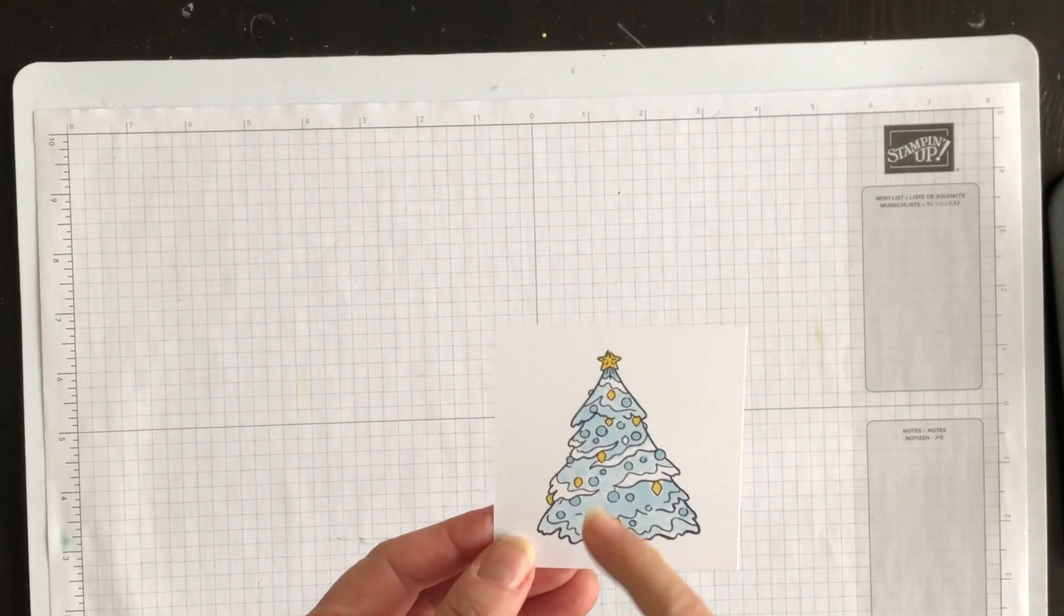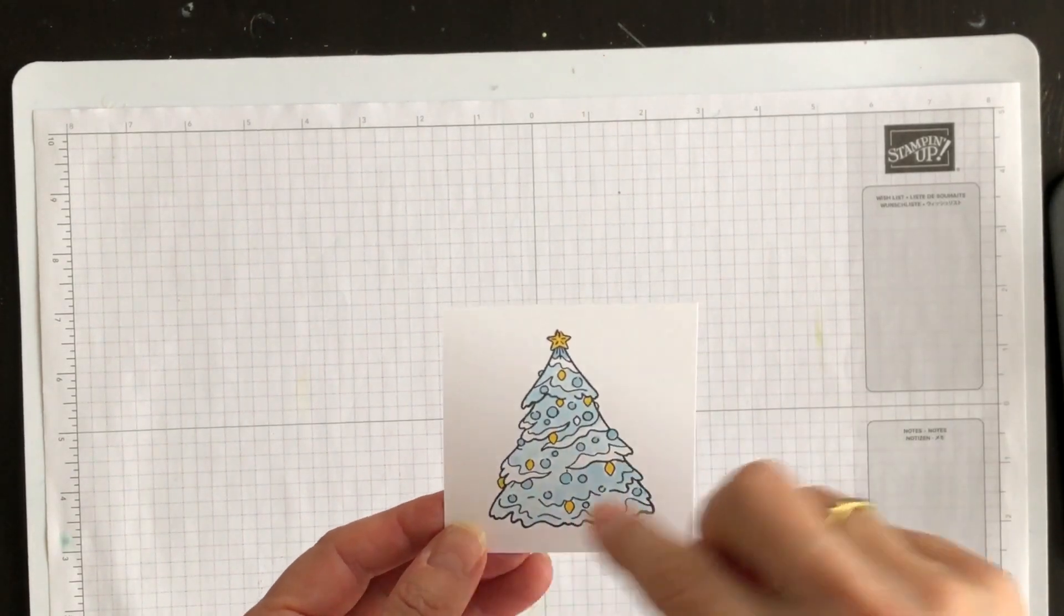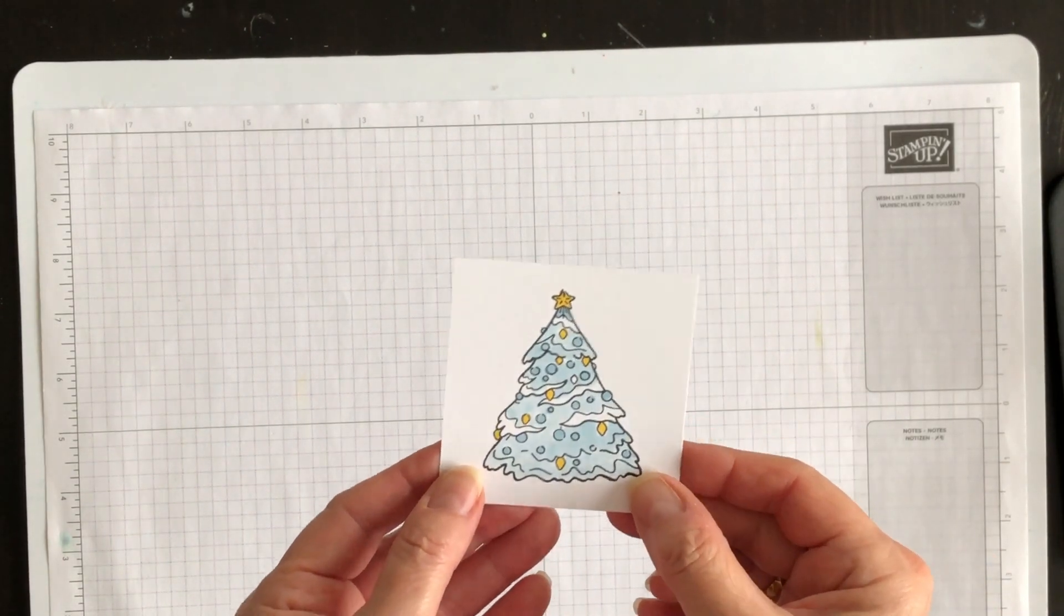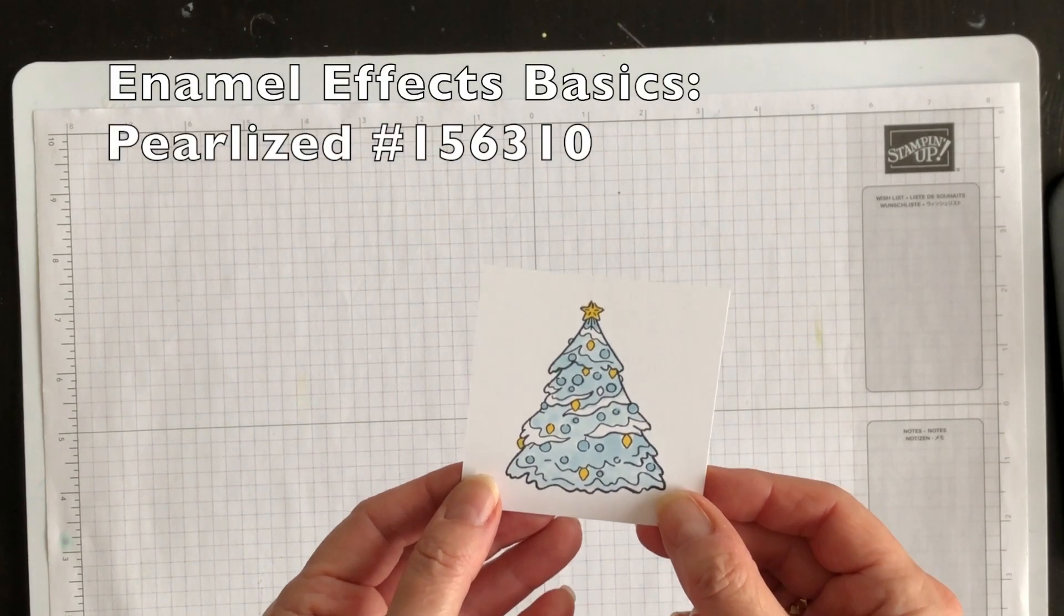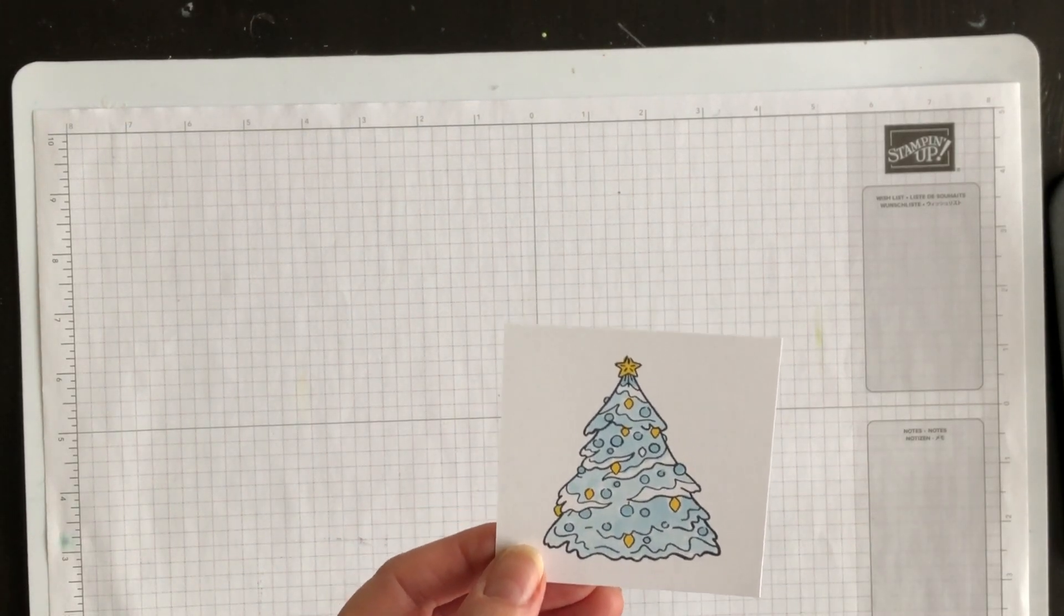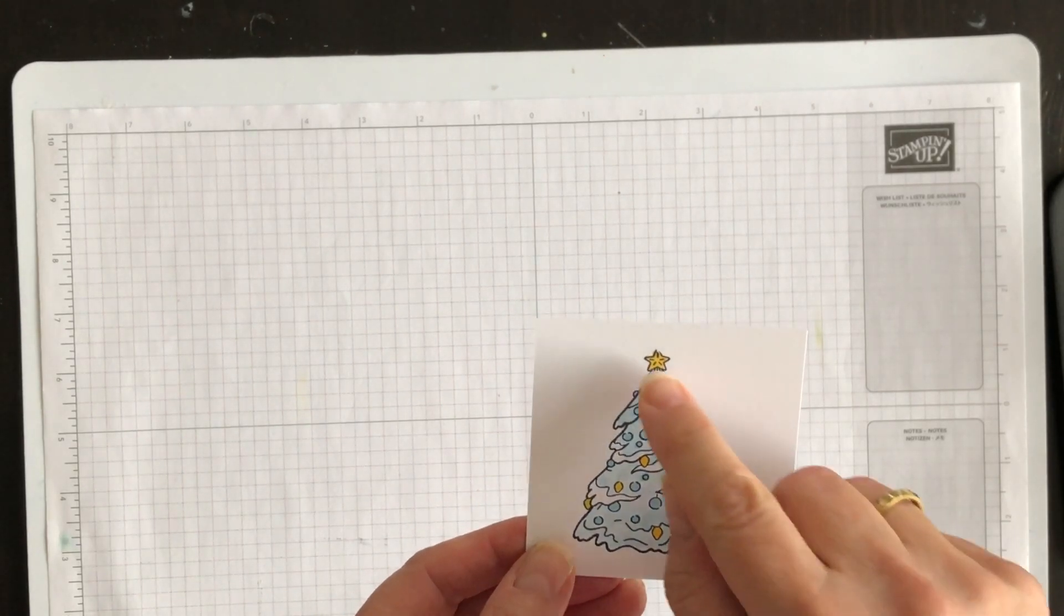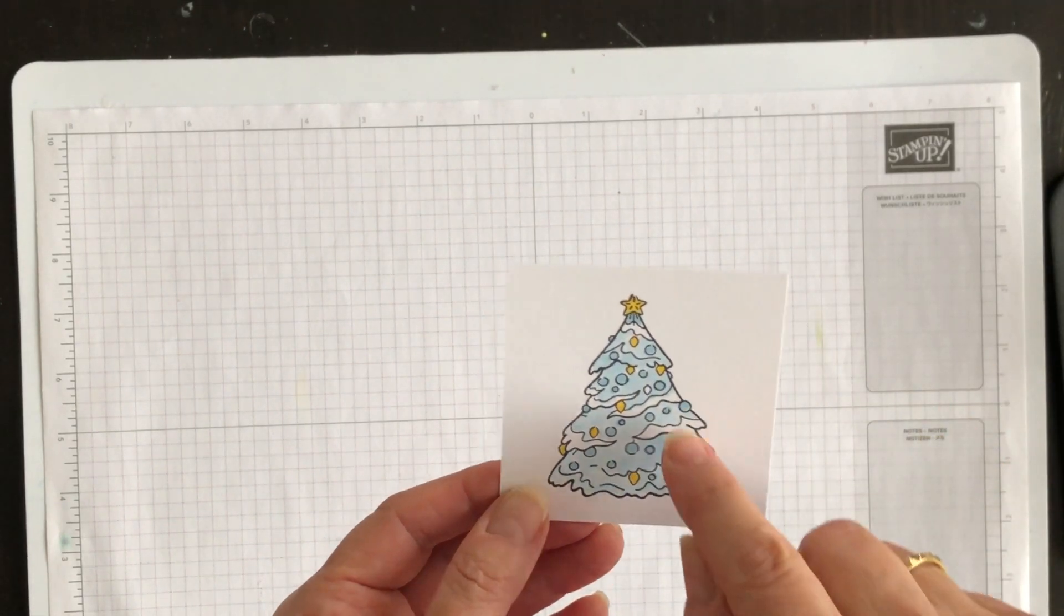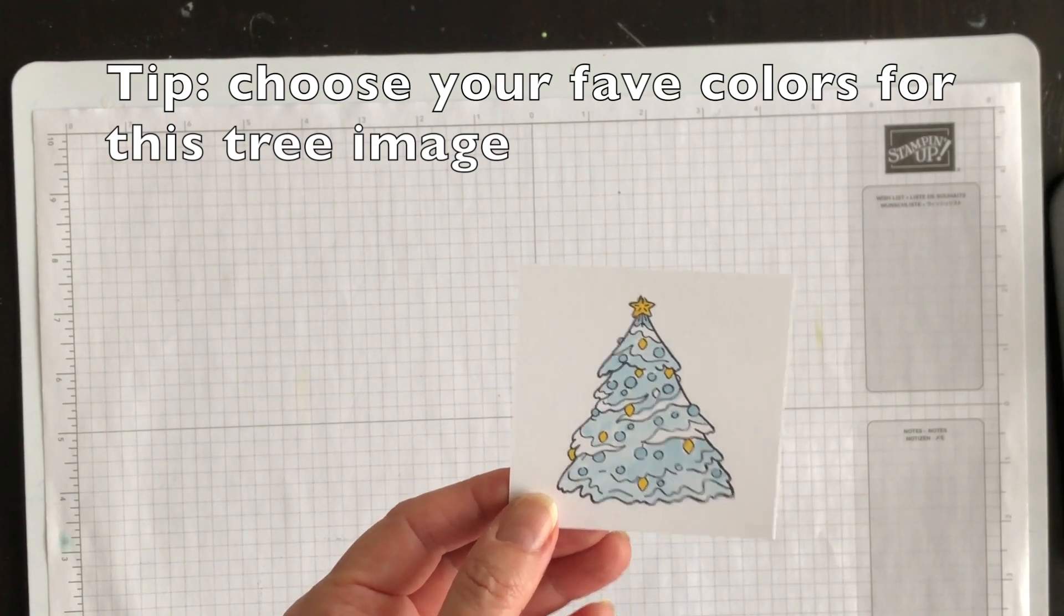Now for my next step, I want to add some glitter to the snow or the garland, I guess, that's wrapped around this tree. Now, in the annual catalog, there's a product called Enamel Basics and it's really cool. Mine hasn't arrived yet, so I'm going to do a cheat. I'm going to take some of our older dazzling details and I'm going to add this. It's like a glitter glue, I guess, and I'm going to add that to the garland on the tree and then I'm going to set it aside to dry.